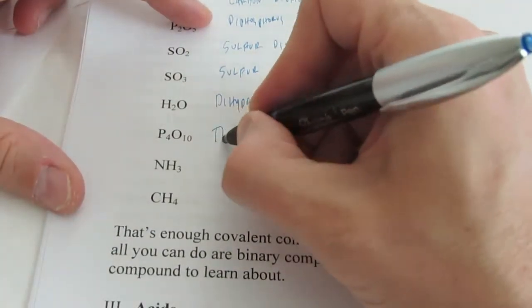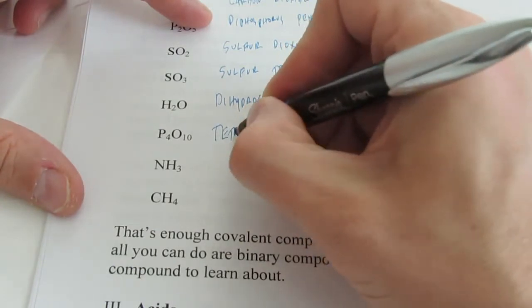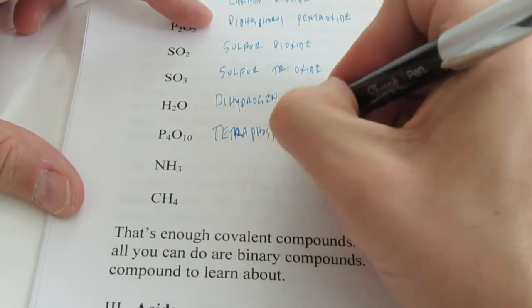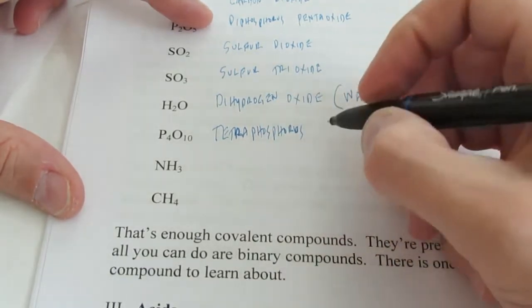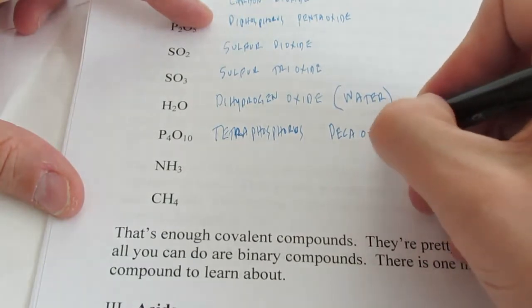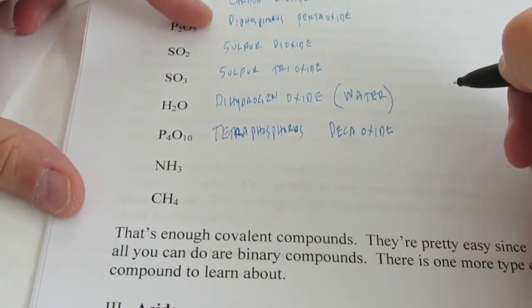Okay. P4O10 is tetraphosphorus. N10 is deca. So decaoxide. P4O10.